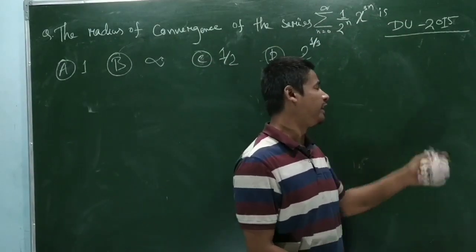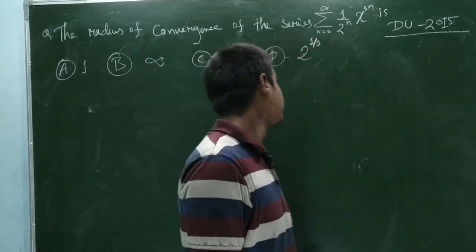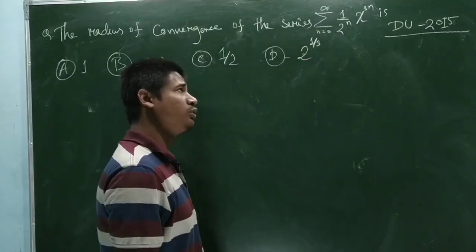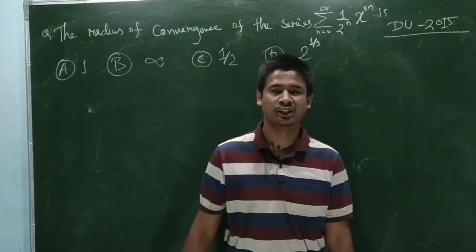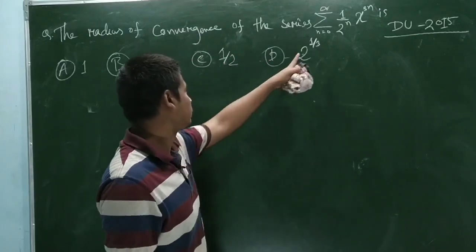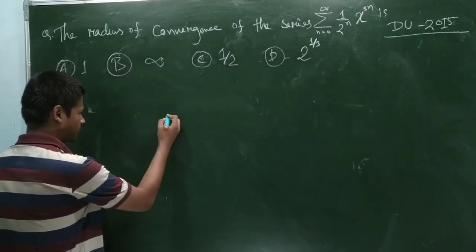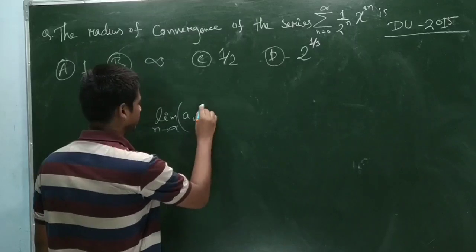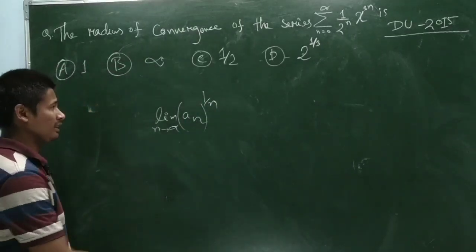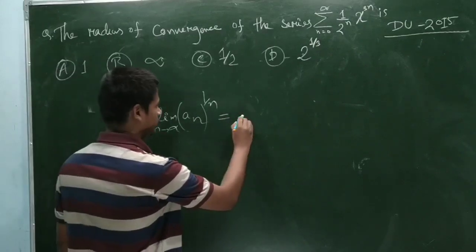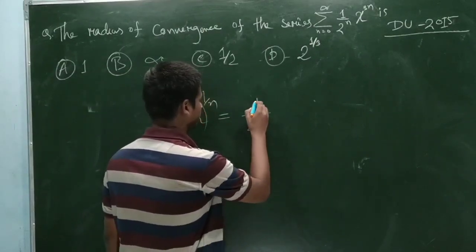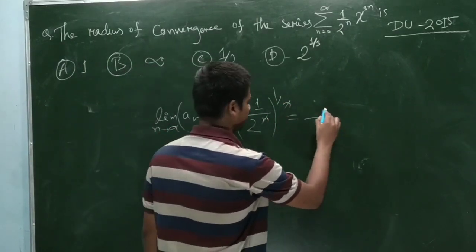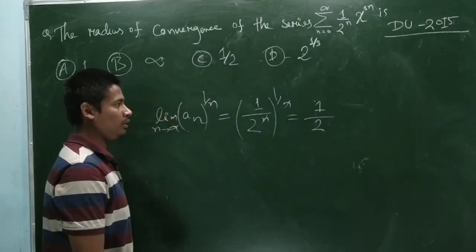Hello everyone. From Delhi University entrance exam 2015, the question is: find the radius of convergence of the series summation of 1 by 2 to the power n, x to the power 3n. Usually for this question, we use the formula: limit as n approaches infinity of a_n to the power 1 by n. Here a_n is 1 by 2 to the power n, and from here the n gets cancelled, giving 1 by 2.